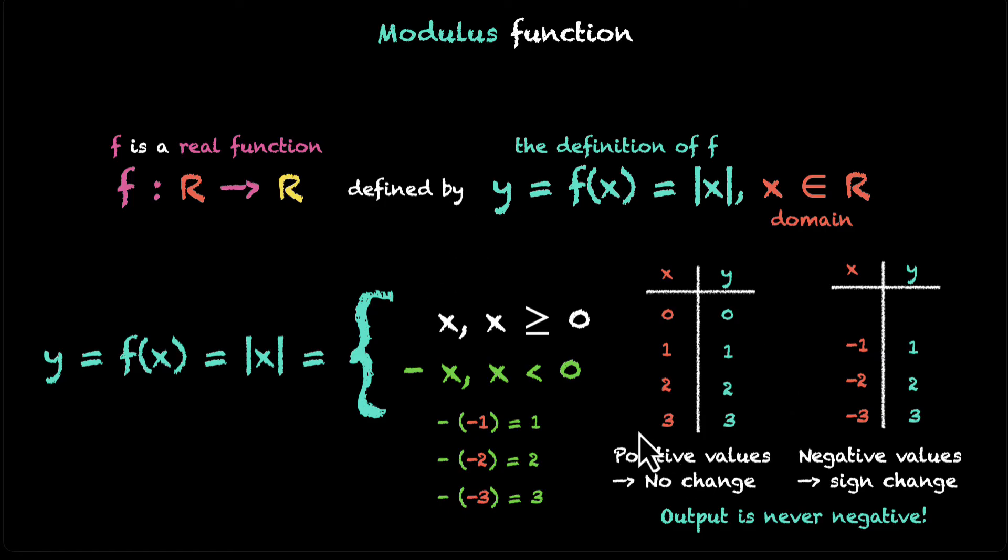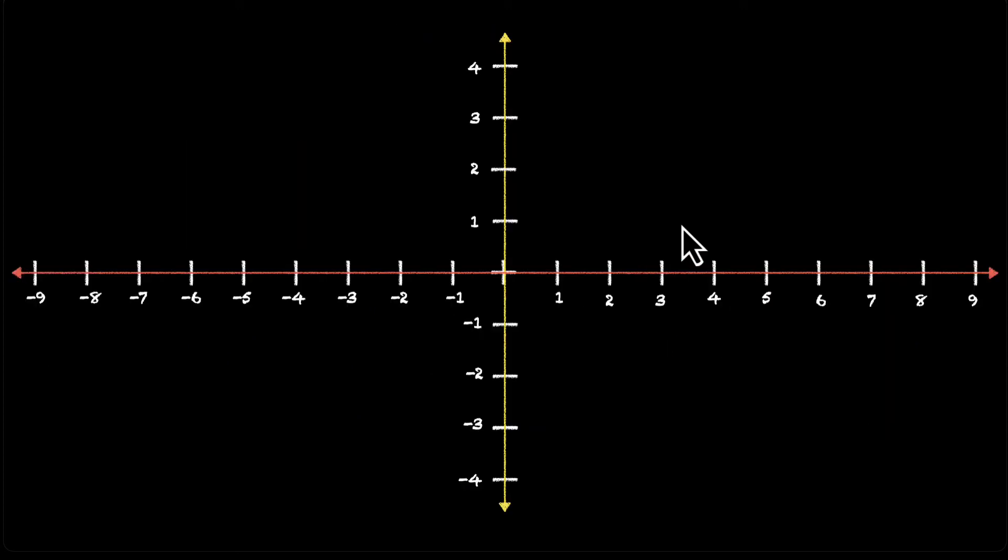This is our x-axis. This is our y-axis. We want y equals mod of x. This is the table. These are some values that we can use to plot. So let's plot zero, zero first. Then let's plot some positive values. So these are one and one, two, two, three, three, and so on.